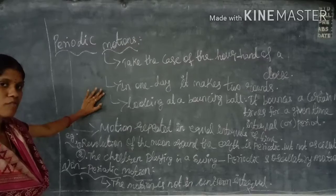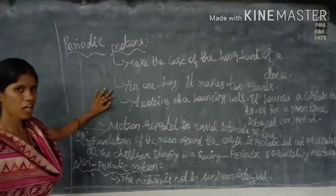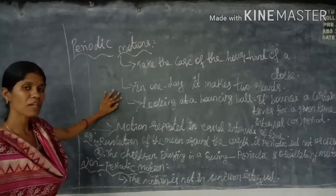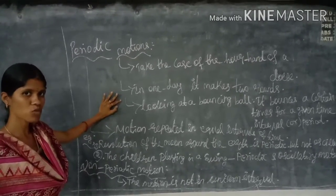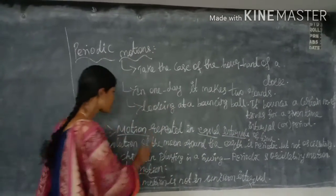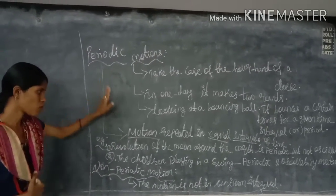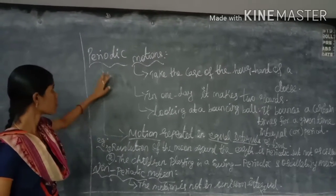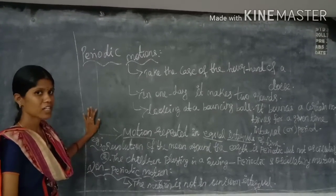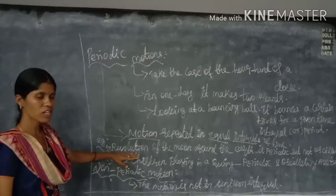Another example is a bouncing ball — it bounces a certain number of times during a given time interval, for example five or six times, and after some time it comes to rest. Motion that is repeated in equal intervals of time is referred to as periodic motion. For example, the revolution of the moon around the Earth is periodic motion, but not oscillatory motion.